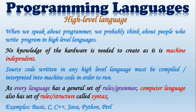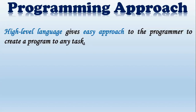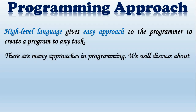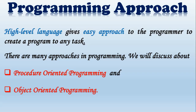Examples of computer languages include BASIC, C++, C, Java, Python, Perl, and many more. So now we know what a computer language is. When we write a program, there are different types of approaches. High level languages give an easy approach to programmers to create a program for any task. There are many approaches in programming, and we will discuss only two: procedure oriented programming and object oriented programming.